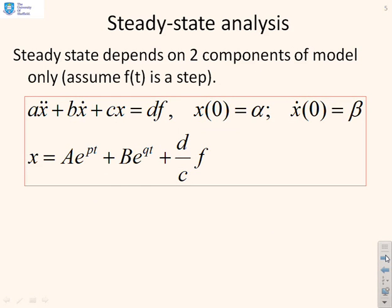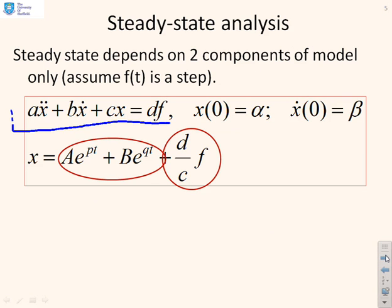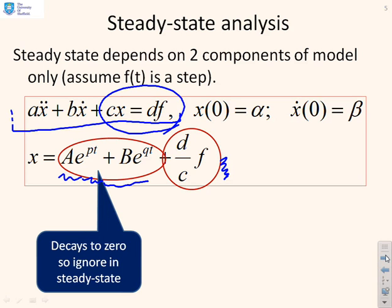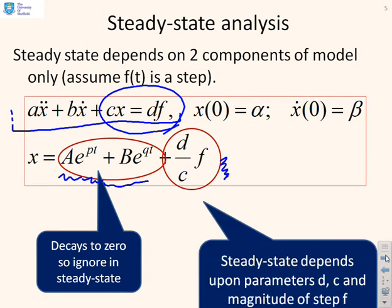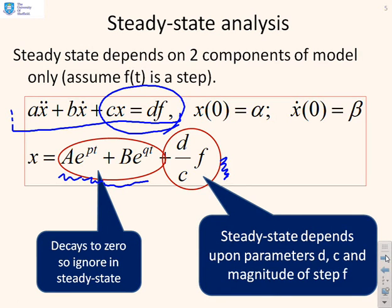Here's an alternative steady state analysis, making a link with the earlier videos in this series where we used a differential equation of this form. The solution had two parts: terms with exponentials ae^(pt) and be^(qt), plus an algebraic part. The steady state term comes only from the algebraic part, cx = df. The exponential terms are assumed to decay to zero and therefore have no impact on the steady state, which depends only upon the parameters d and c, and the magnitude of the step applied in f.